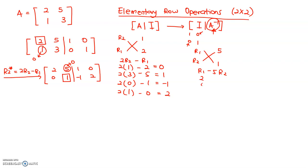Row 1 is 2, 5, 1, 0. Row 2 is 0, 1, negative 1 and 2. So, we have to be very careful, especially when we play with positive and negative signs.